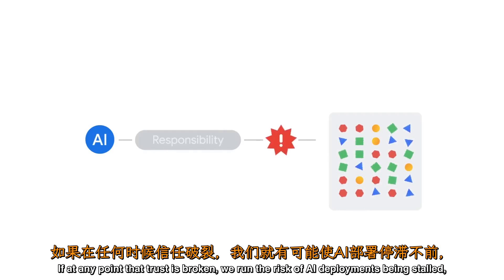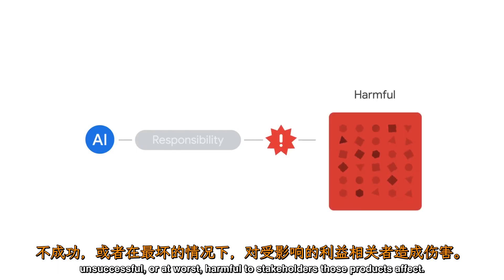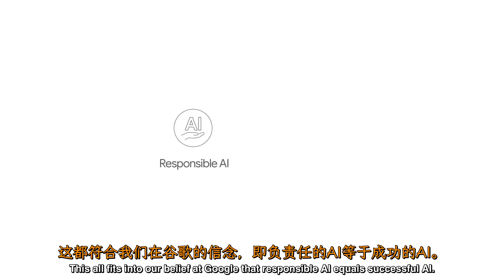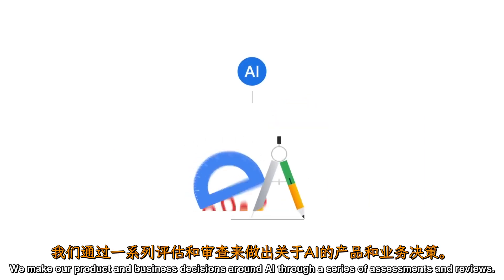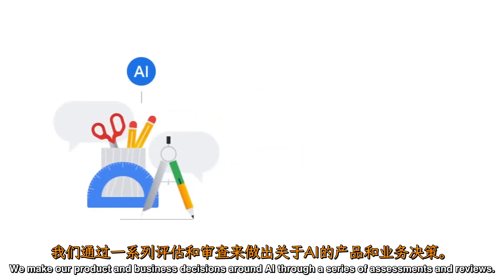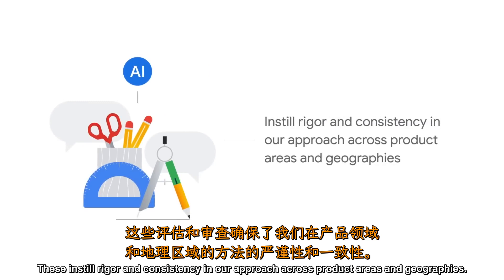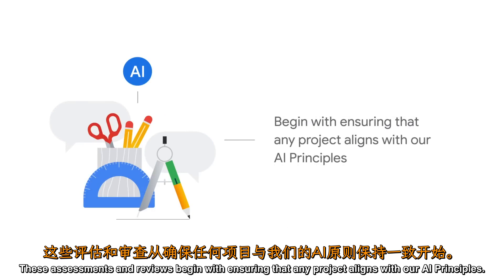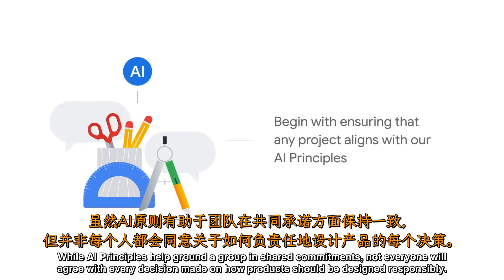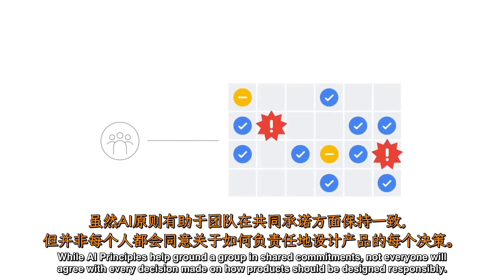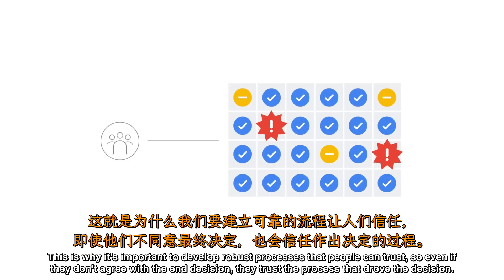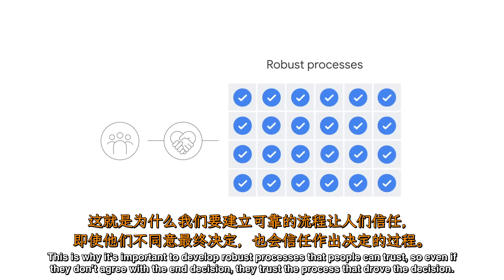If, at any point, that trust is broken, we run the risk of AI deployments being stalled, unsuccessful, or at worst, harmful to stakeholders those products affect. This all fits into our belief at Google that responsible AI equals successful AI. We make our product and business decisions around AI through a series of assessments and reviews that instill rigor and consistency in our approach across product areas and geographies. These assessments and reviews begin with ensuring that any project aligns with our AI principles. While AI principles help ground a group in shared commitments, not everyone will agree with every decision made about how products should be designed responsibly. This is why it's important to develop robust processes that people can trust, so even if they don't agree with the end decision, they trust the process that drove the decision.